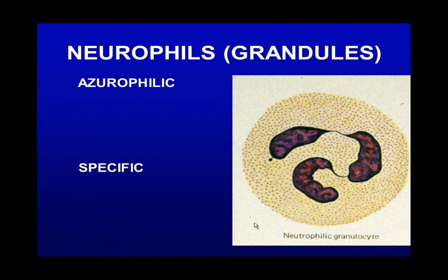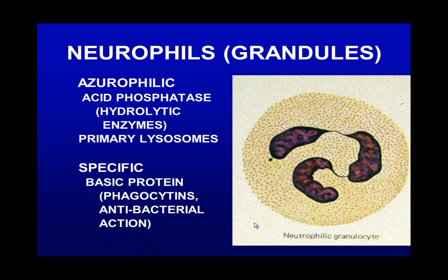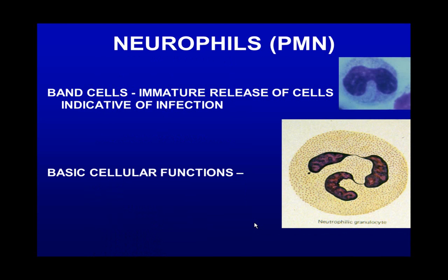Neutrophils have two types of granules. They have azurophilic granules, which are basically primary lysosomes containing acid phosphatase. They also have specific granules, which contain basic proteins that allow antibacterial action. That's why neutrophils are the ones that attack whenever you have an infection.